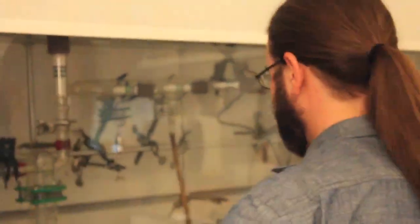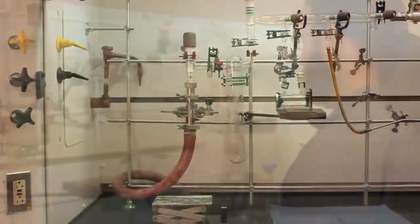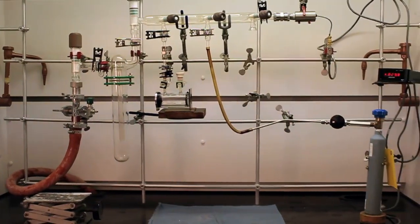HCl and DCl are found in the gas phase when they are pure. Therefore, we'll use a gas manifold system to prepare our samples.